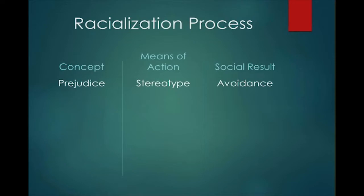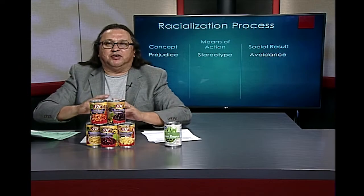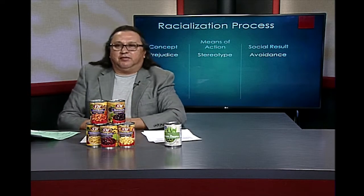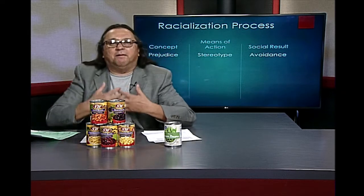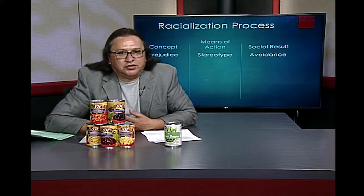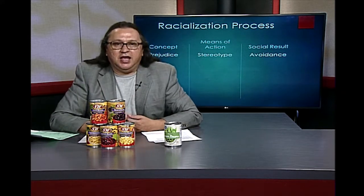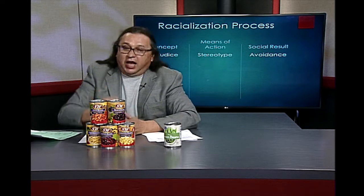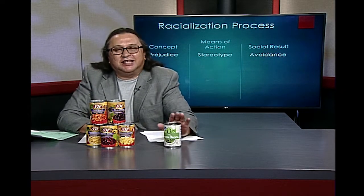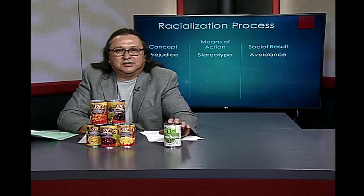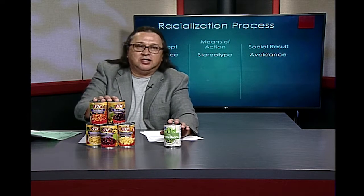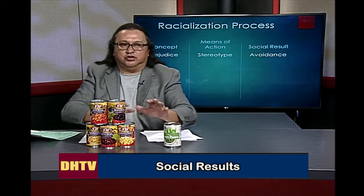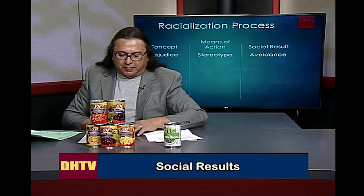Looking at the first PowerPoint slide: the concept was prejudice, the means of action to carry out my prejudice was to create a stereotype, and the social result was avoidance. This is very important because this is at the individual level — it is my own personal problem. I have a prejudice against these green beans. These are awesome; these are not.